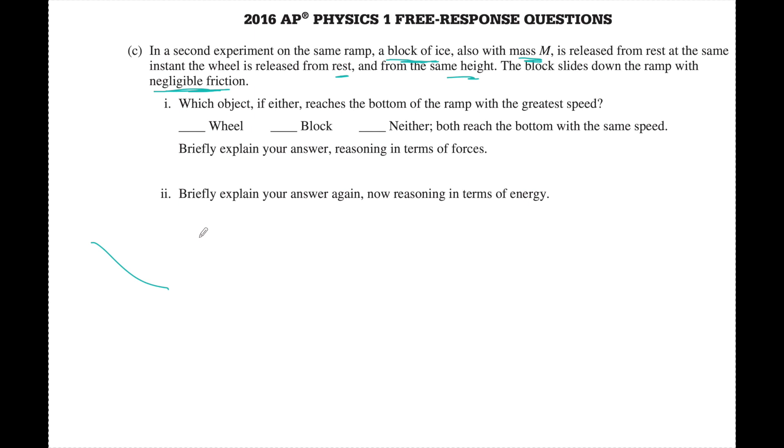And this is an idea and a topic that they're going to test every single year on the AP exam. When you look at two objects that come down inclines, if you have a wheel that's going to be spinning and you have a block with no friction, this one is always going to get down here faster. That is something they want you to know and they are going to test every single year.